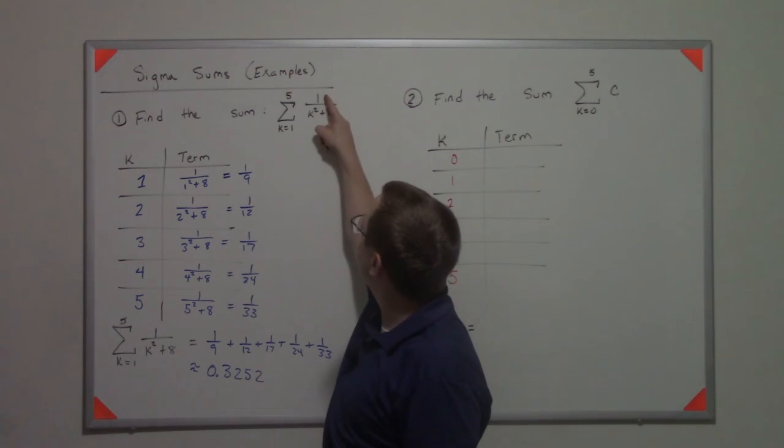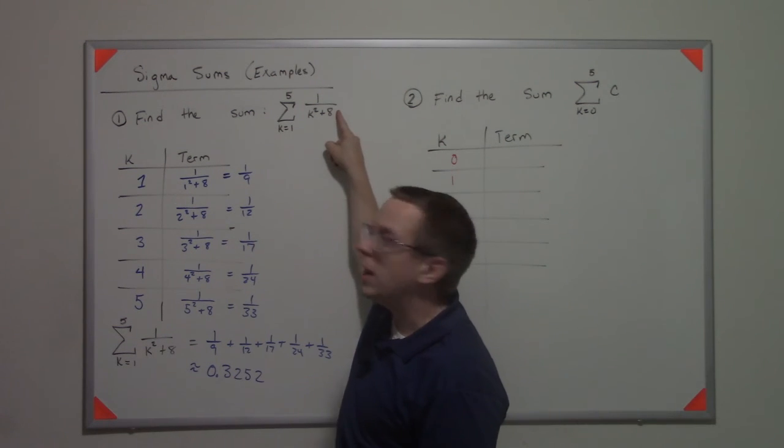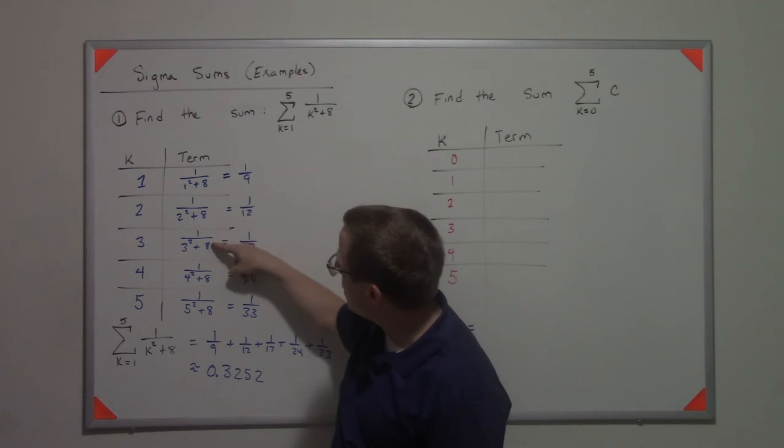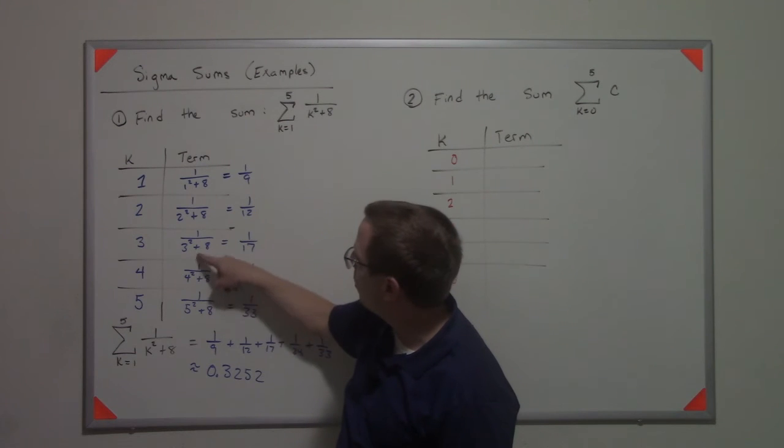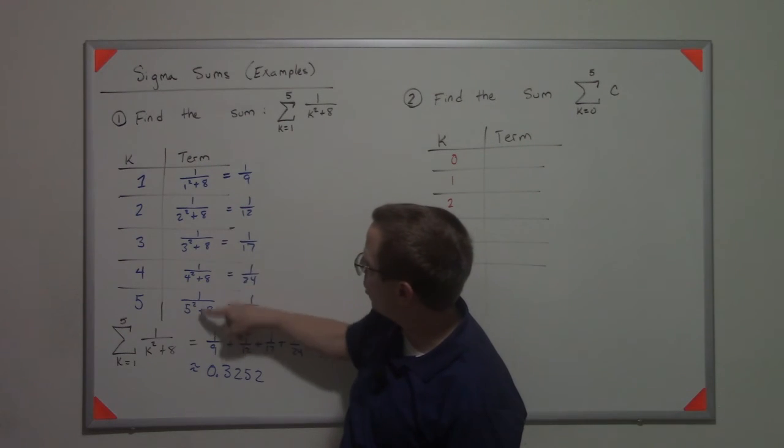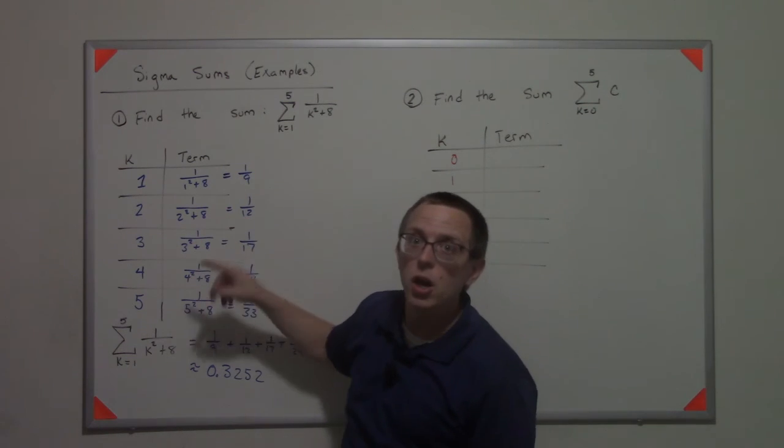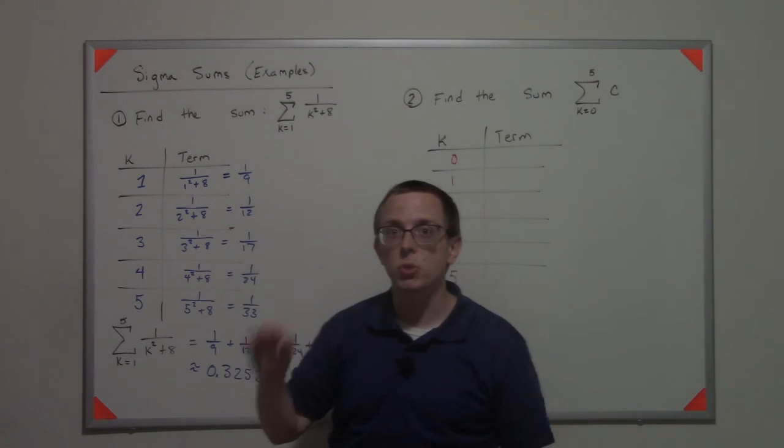Like over here, it was one in the numerator and eight in the denominator, and then of course the addition symbol. That stayed the same each time. So one and eight and then plus is here. And then of course the exponent as well didn't change. The only thing that changed was based on the index.